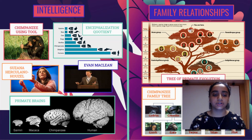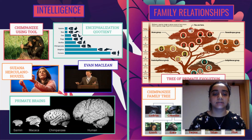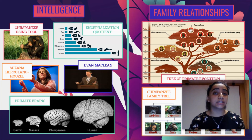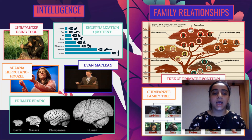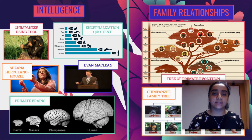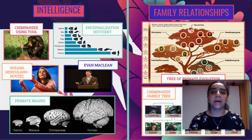Recently, neuroscientist Suzana Herculano-Houzel and anthropologist Evan MacLean found groundbreaking evidence that disproves the EQ system and supports Goodall's research. Herculano-Houzel began counting neurons in animal brains instead of weighing them, finding that different animals have brains structured in different ways — primates don't have the heaviest brains, but they have the most neurons because their brains are specialized and compartmentalized. MacLean conducted impulse control tests and found chimpanzees and gorillas were some of the best performers.